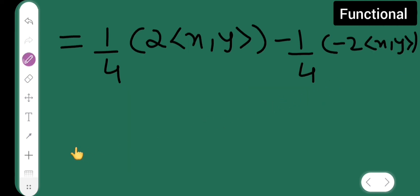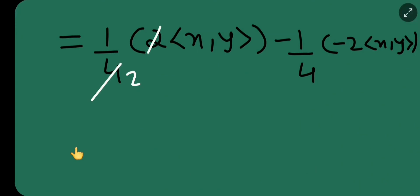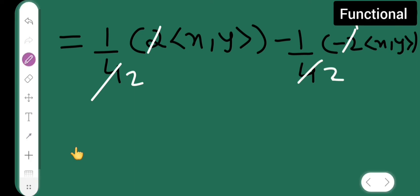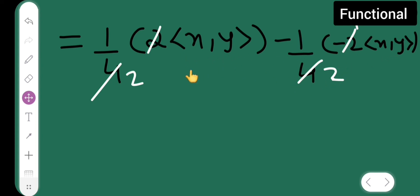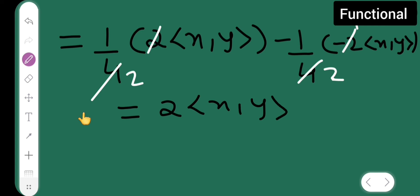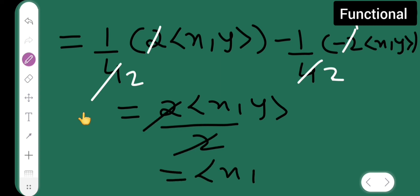Now, this 2 gets cancelled. What will remain? We have 1 upon 2 inner product of x comma y, and minus and minus is plus, so plus half inner product of x comma y. This plus this gives twice the inner product, so this is equal to twice inner product of x comma y upon 2. The 2s get cancelled, so what I get is inner product of x comma y, which is nothing but the left-hand side.